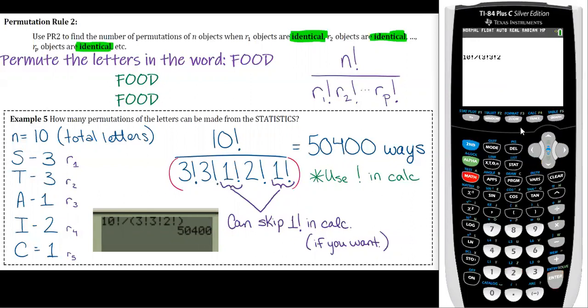2 factorial is really just 2 because it's 2 times 1, which is still 2. But just in case you're not comfortable with knowing that, I'm gonna go ahead and just use the factorial anyways. Okay, and then close your parentheses, press enter, and you get the 50,400.